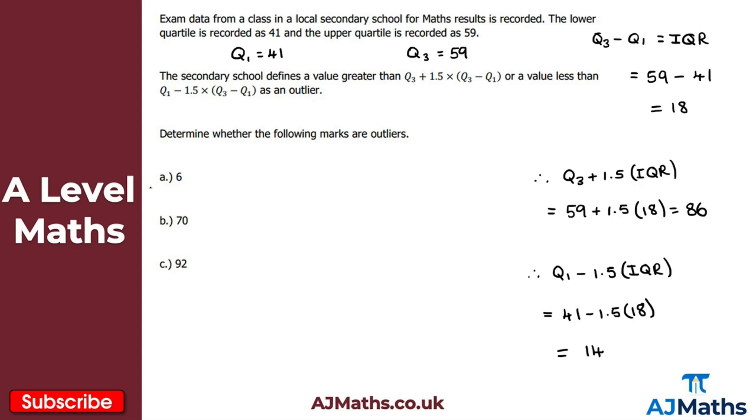So let's start with the first mark here of 6. Well, 6 is less than 14. So for part A here, 6 is less than 14. Therefore 6 is an outlier.